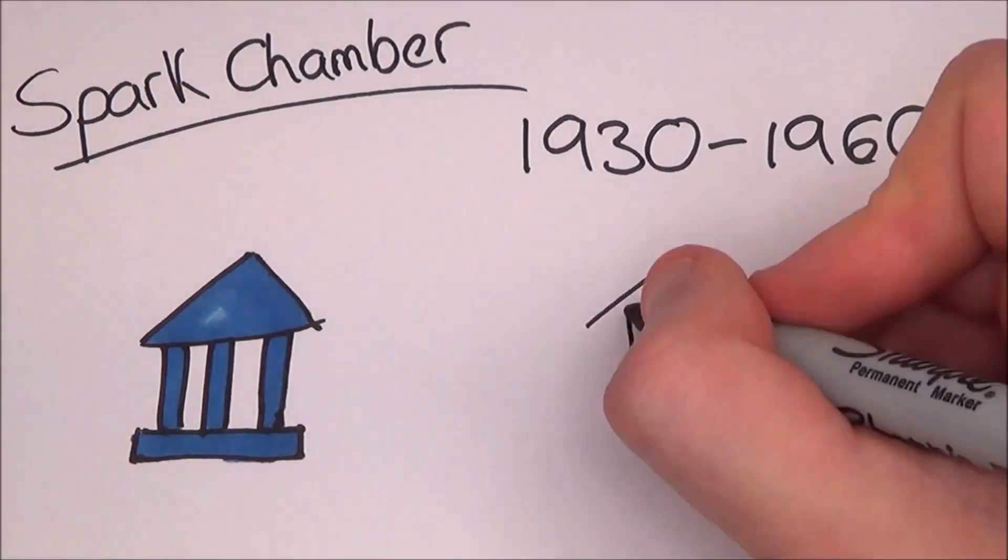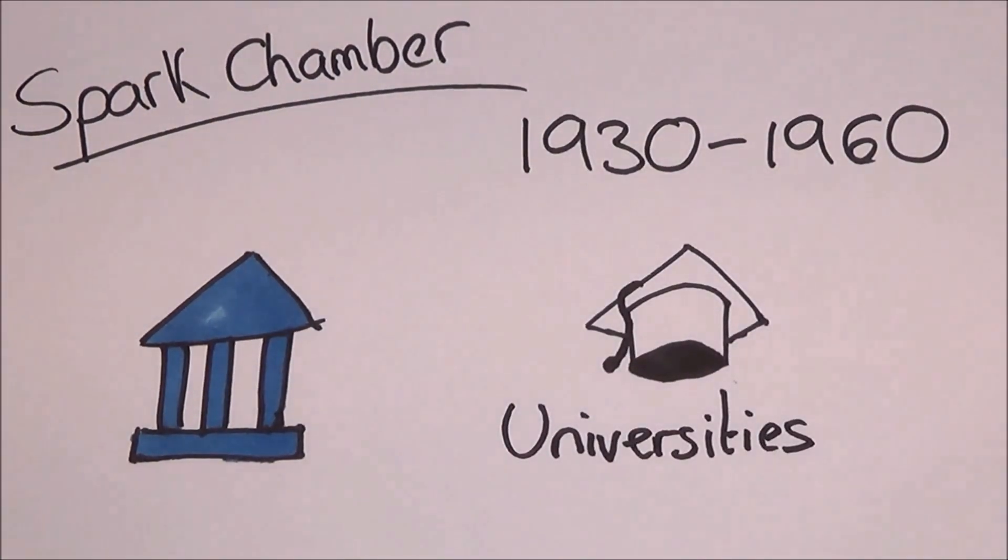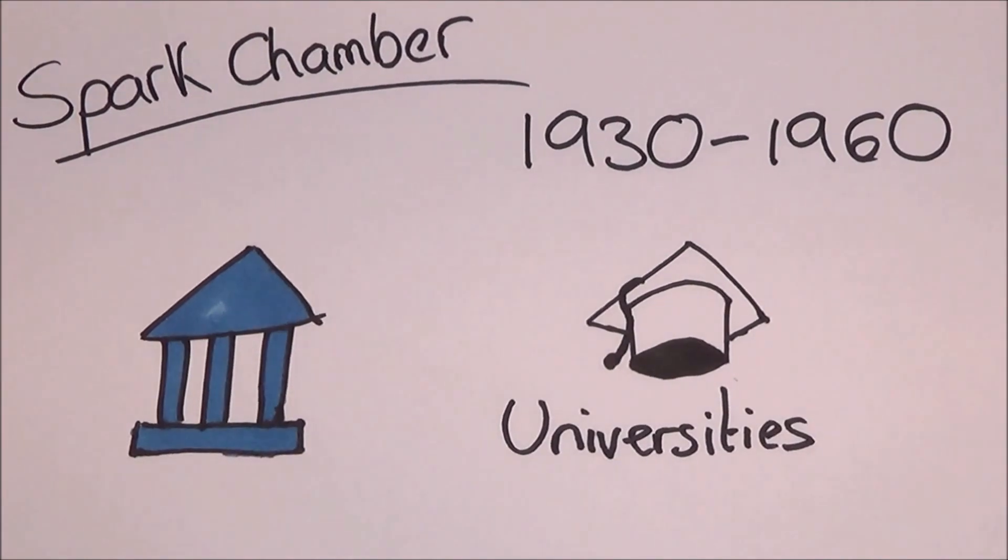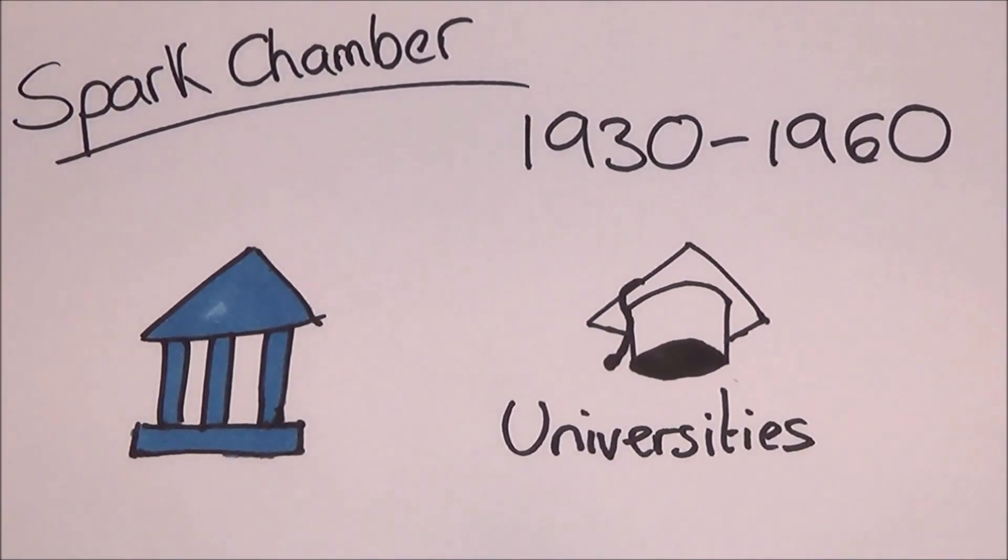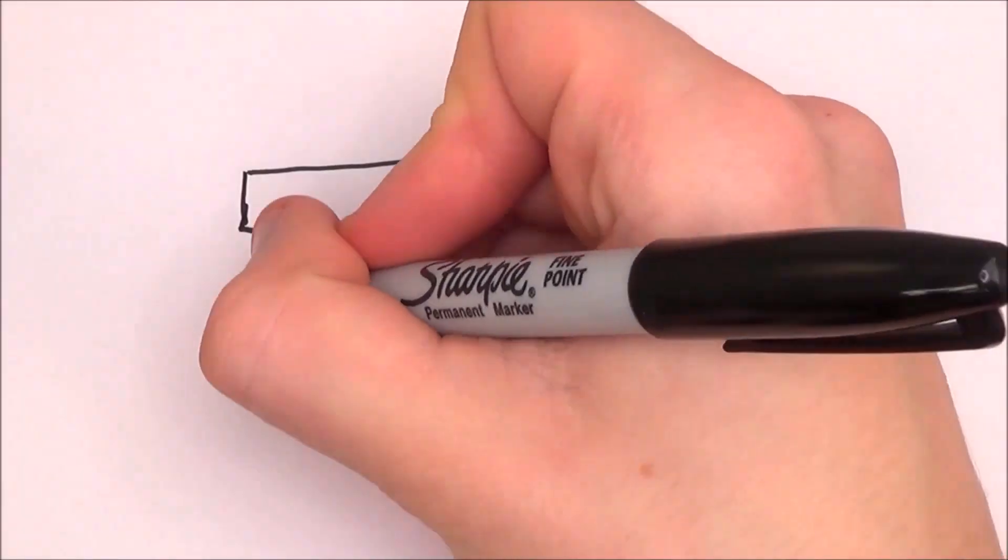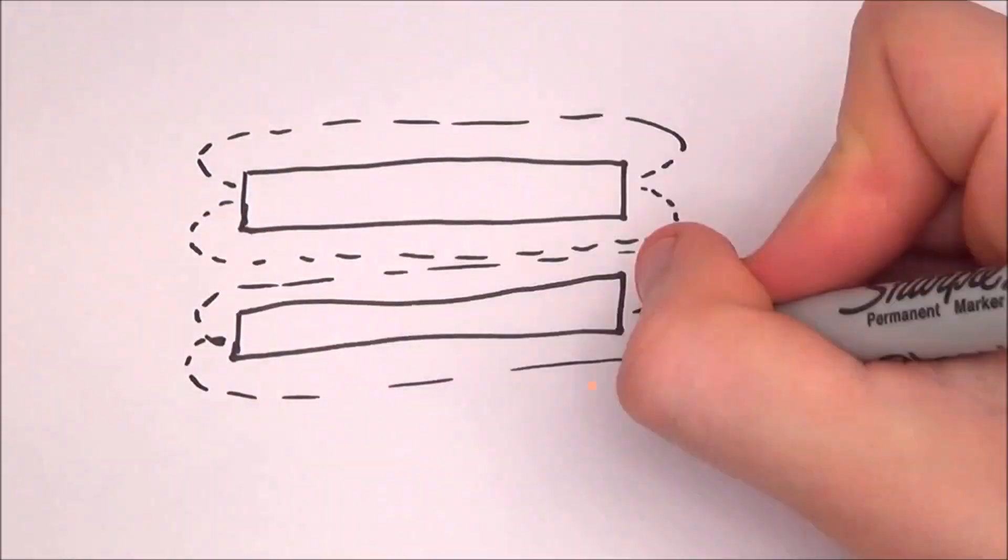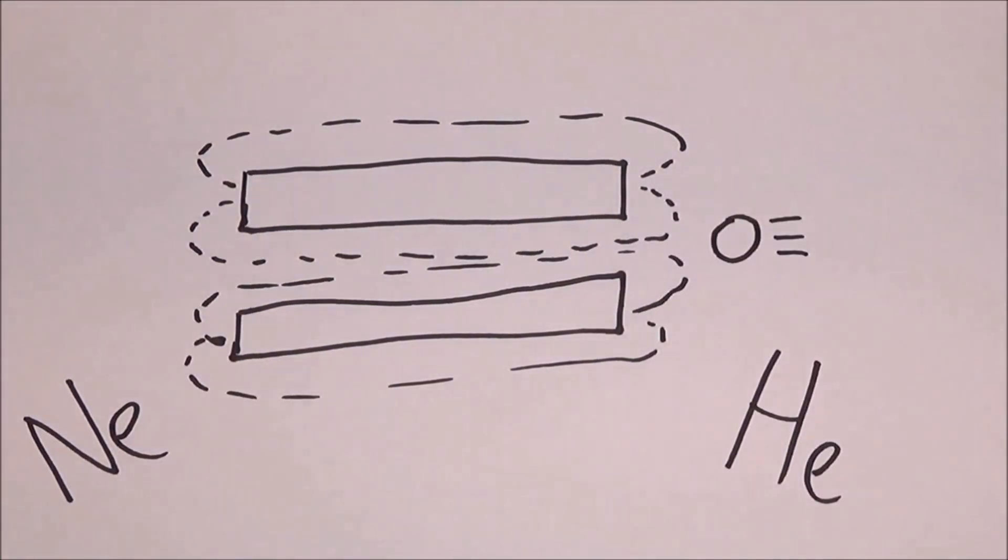Now spark chambers were used for detecting electrically charged particles. They were mostly used between 1930 and 1960, but now have been superseded by other devices. Today, we can normally find them in museums or educational organizations. They consist of a stack of metal plates in a sealed box filled with gas, normally a noble gas like helium or neon, or even mixtures of the two.